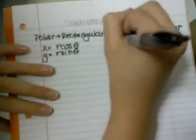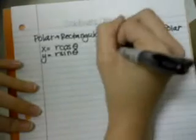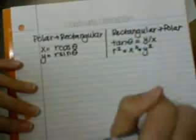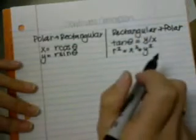From rectangular to polar, we're going to take the tangent of our angle theta, and that is going to give us our y over our x. And then r squared equals x squared plus y squared. So I'll plug in my x and my y and get my r out. Those are the pieces that we need to be able to do some examples.